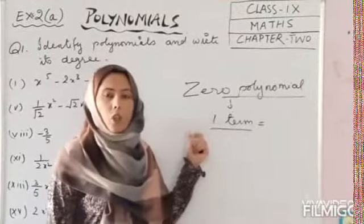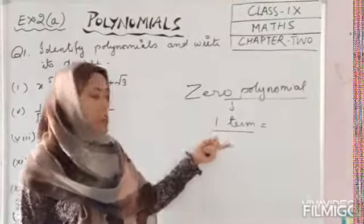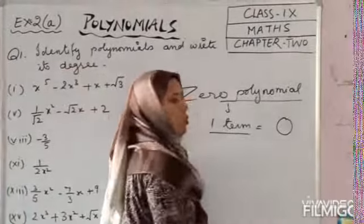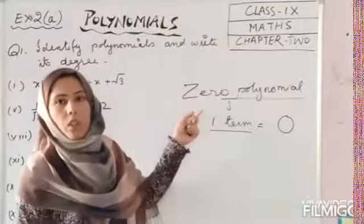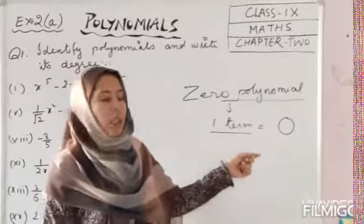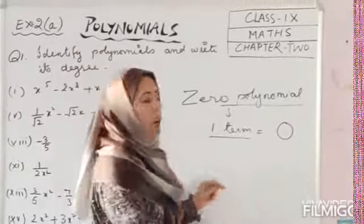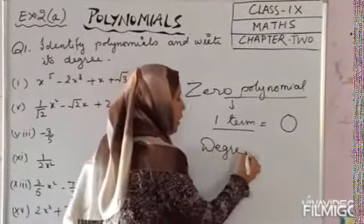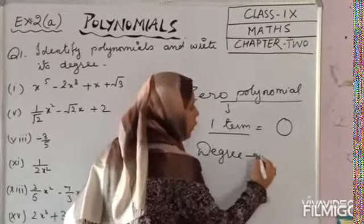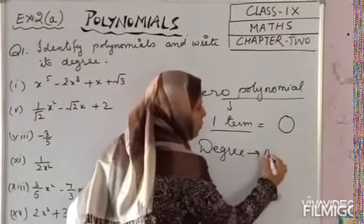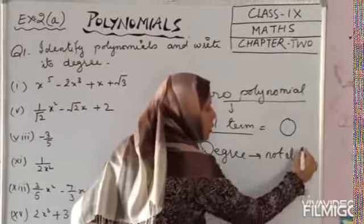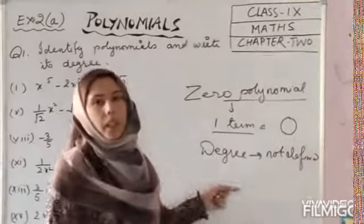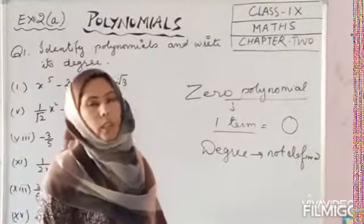The last type of polynomials is the zero polynomial. It also has only one term, and that term is 0. Two polynomials having one term and that term is 0 — their degree is not defined.